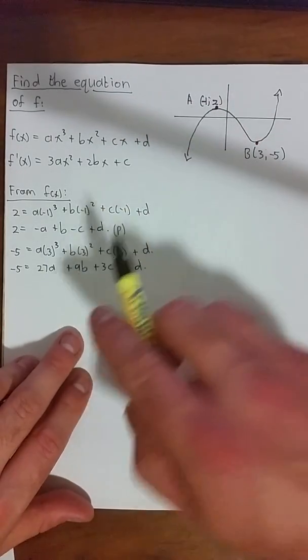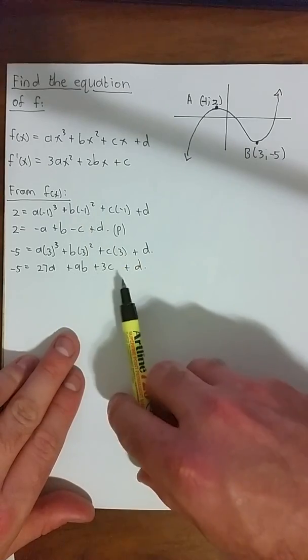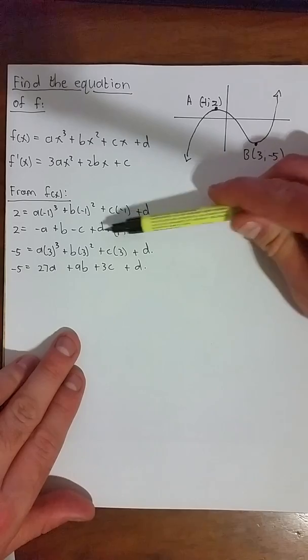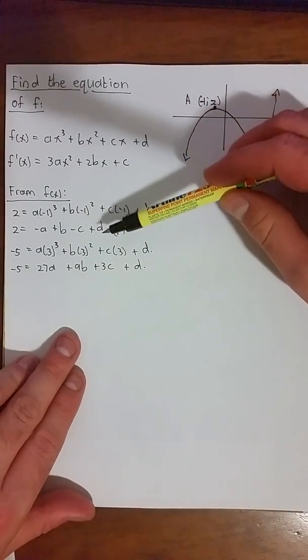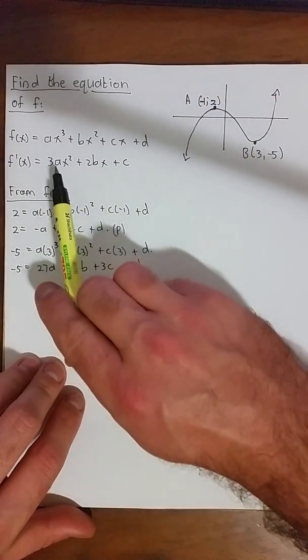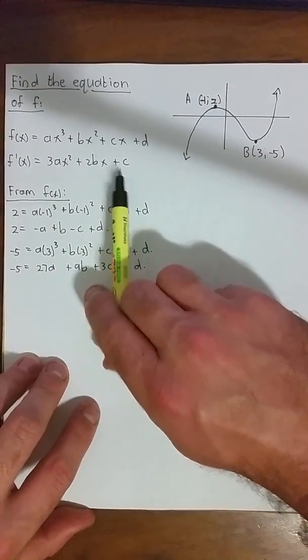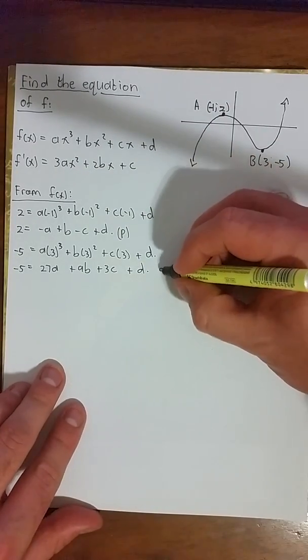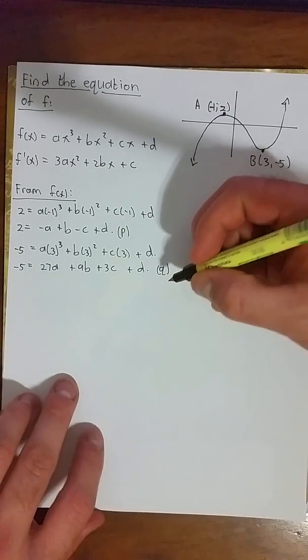Now, what we see here is we've got 2 equations with 4 unknowns each, but we see both of the d's have a coefficient of 1. So what we can do here is just subtract one from the other to give us an equation that only contains a, b, and c, which makes life a little bit easier for us.